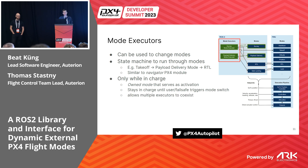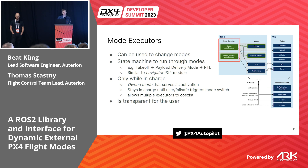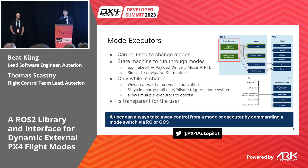An executor can only operate while it is in charge, and for that it defines an owned mode that serves as an activation point. When the user selects that mode, the owning executor gets activated and can start selecting any mode. It stays in charge until either the user switches modes or a failsafe triggers a mode switch. This definition allows multiple executors to coexist and run at the same time. Mode executors are transparent to the user — the user selects modes, not executors — and this guarantees that a user can always take control back at any point by switching modes via RC or GCS.